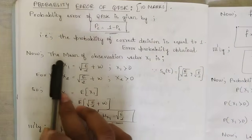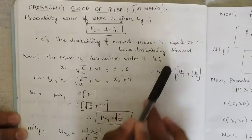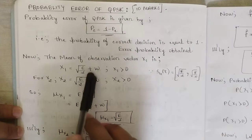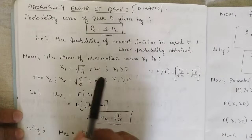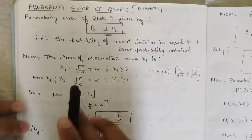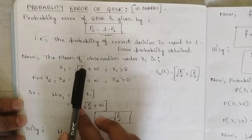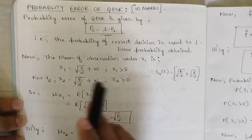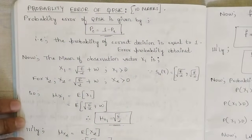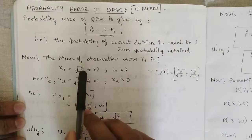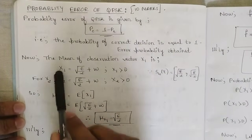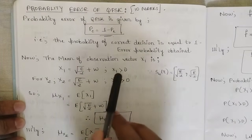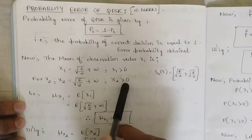The observation vector x1 is given by x1 = √(E/2) + w. In the previous case for BPSK we had only √E, but here we use √(E/2) because we have four different combinations. So we use √(E/2) + w for x1, and for x2 it is also √(E/2) + w, applicable when x1 > 0 and x2 > 0.